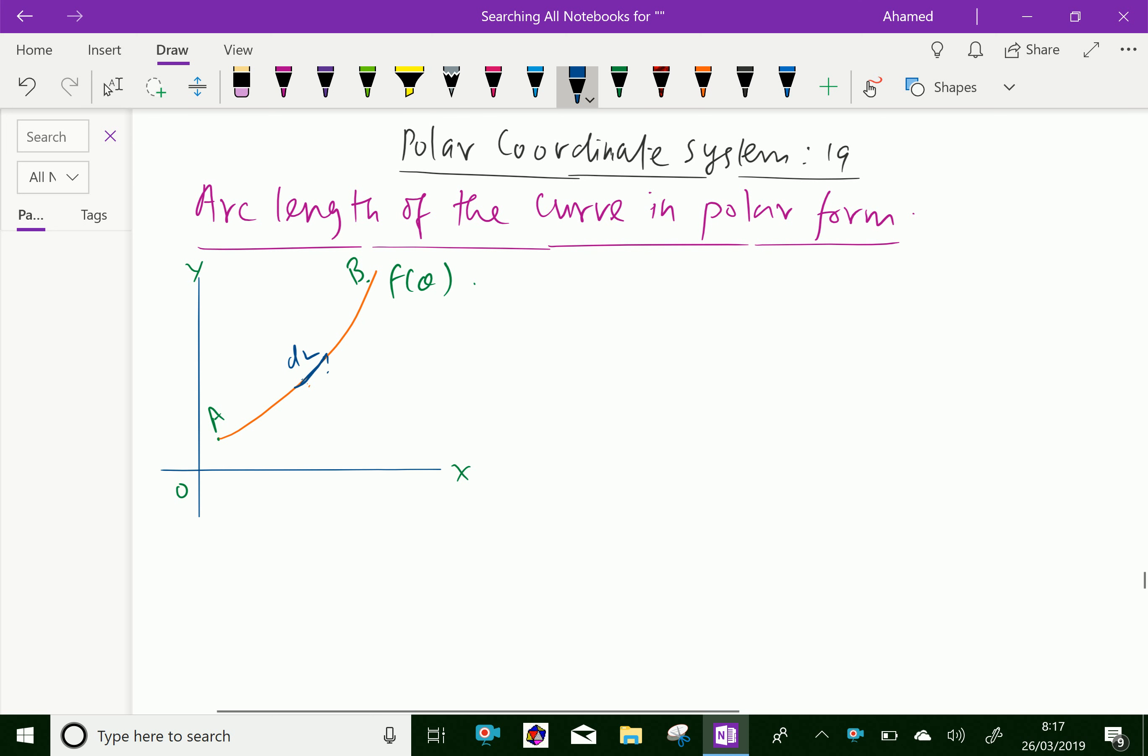Now, the given curve r equals f of theta. In polar coordinate system, x equals r cos theta, and y equals r sin theta.